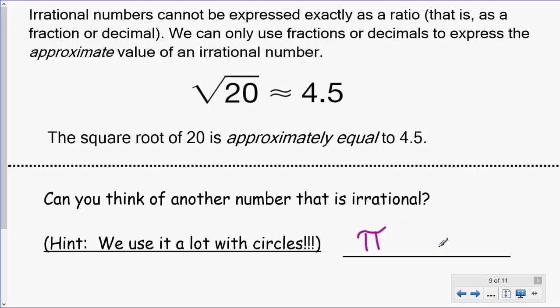Another irrational number that we use a lot is pi. We use that for area and perimeter of a circle. Pi is approximately equal to 3.14 as we know. But there is no decimal number that you can write that truly equals pi. It's a non-repeating decimal that goes on forever, a non-terminating decimal as well.